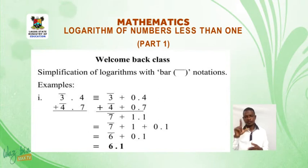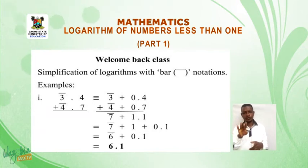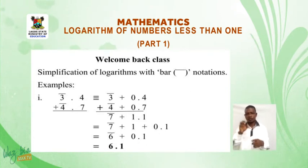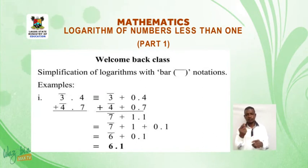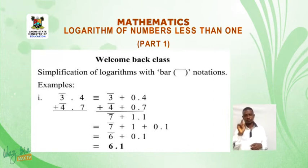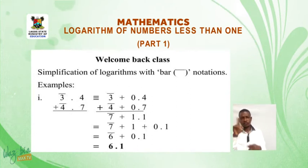Simplification of logarithm with bar notation. Examples. 1. Bar 3.4 plus bar 4.7 is equivalent to bar 3 plus 0.4 plus bar 4 plus 0.7. Adding the two together will give us bar 7 plus 1.1, which is equal to bar 7 plus 1 plus 0.1, which gives us bar 6 plus 0.1, which is equal to bar 6.1.